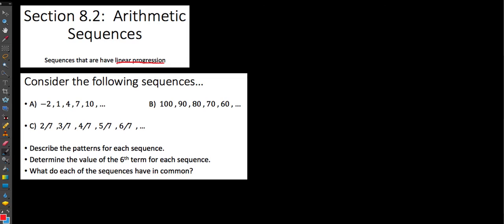What I want to do is describe the pattern, see if we can use that pattern to determine the value of the sixth term in each of these sequences, and then see if we can come up with what each of these sequences has in common with the other. This very first one goes negative two, one, four, seven, ten — it looks pretty consistent. From term to term, we notice that it's increasing by three, changing by three on our output for every one on our input.